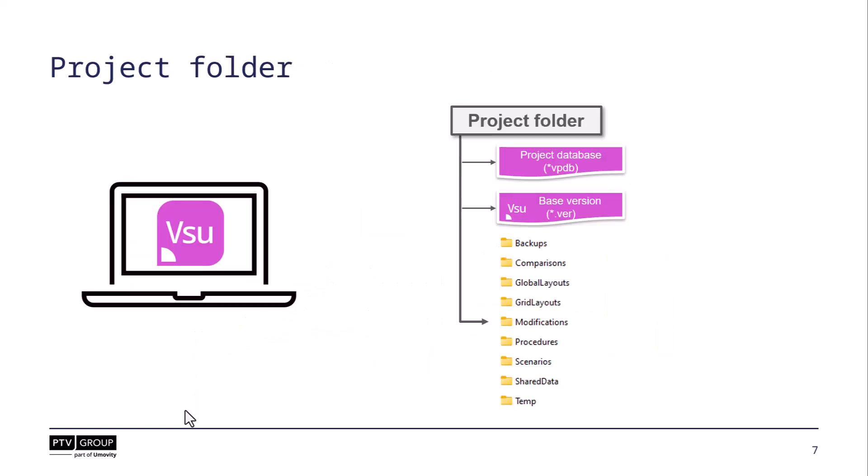When you create a scenario management project in Visum, a file system folder with a dedicated structure of subfolders is created too. You can see here the corresponding subfolders. Except for the folder 'shared data', these folders should never be touched directly, because everything here is managed through the Visum user interface. Along with the folder structure, there are some single files — namely the base version file for the project, a vpdb file and a vpdbx file — which store general project data and serve as the links to open the project.